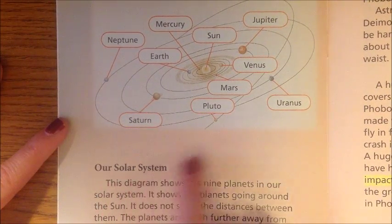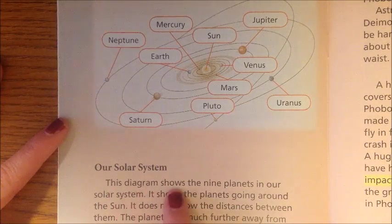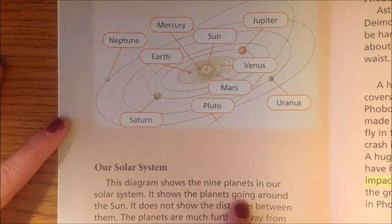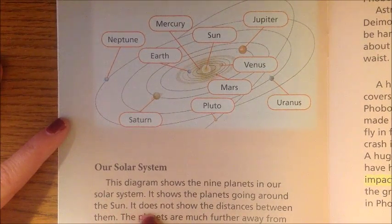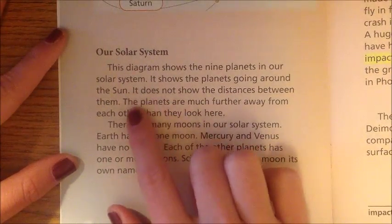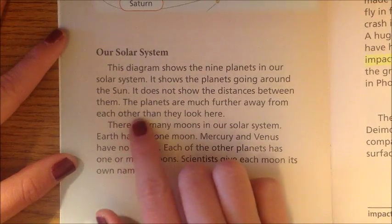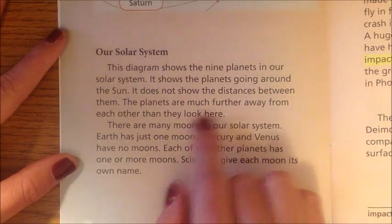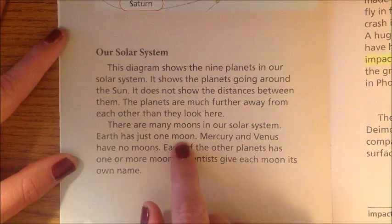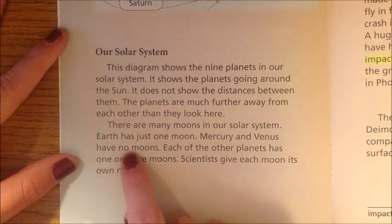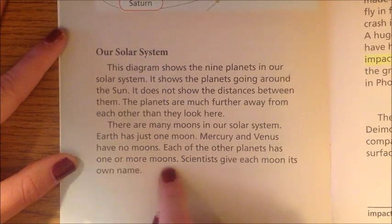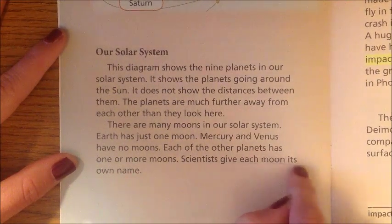Our solar system. This diagram shows the nine planets in our solar system, going around the sun. It does not show the distances between them — the planets are much further away from each other than they look here. There are many moons in our solar system. Earth has just one moon. Mercury and Venus have no moons. Each of the other planets has one or more moons. Scientists give each moon its own name.